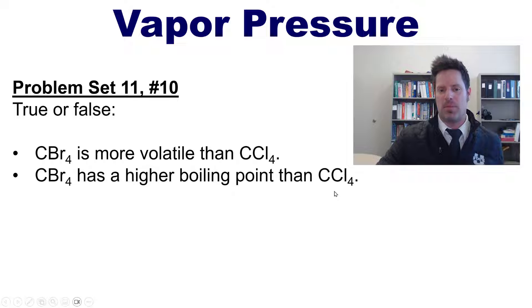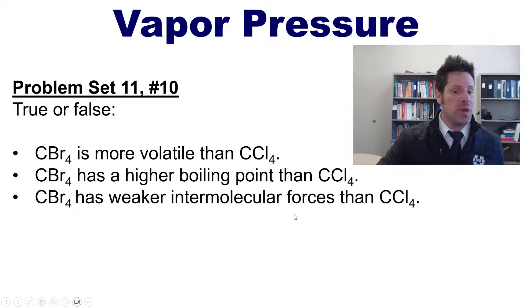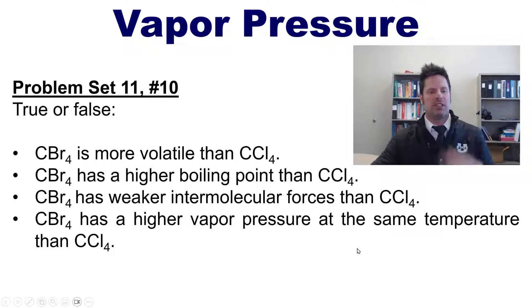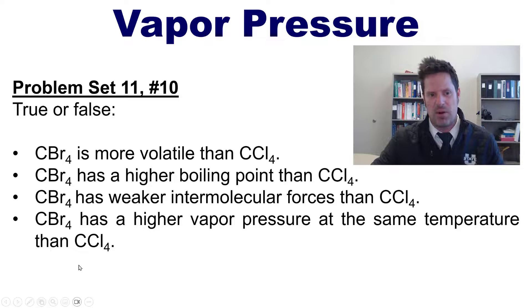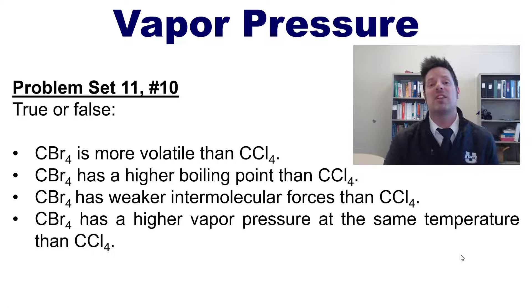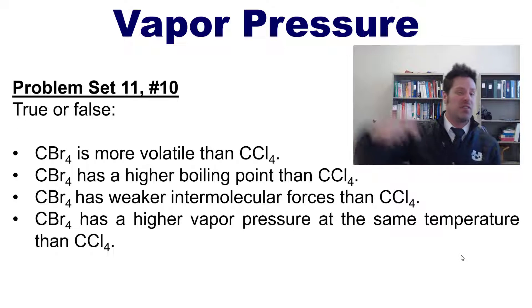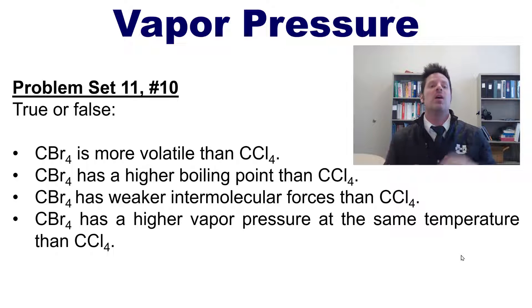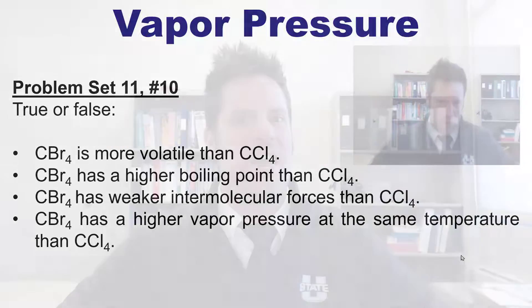We end with this question — true or false: carbon tetrabromide (CBr4) is more volatile than CCl4; CBr4 has a higher boiling point than CCl4; CBr4 has weaker intermolecular forces than CCl4; and CBr4 has higher vapor pressure at the same temperature than CCl4. I invite you to try this on your own, then click the video link in the description below where I answer it for you. Until next time, my dear students and others — please have an enjoyable rest of your day.